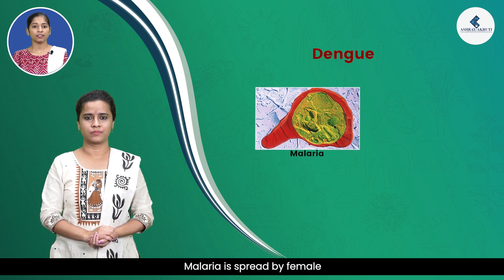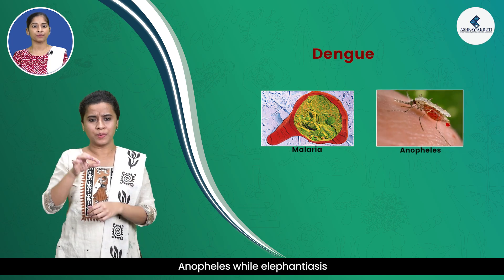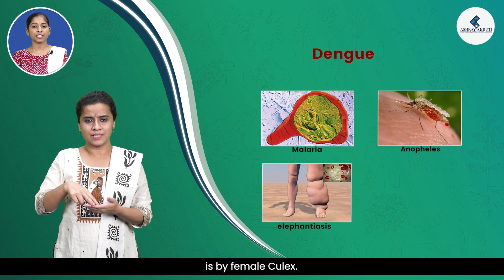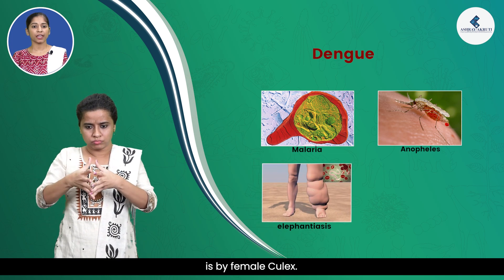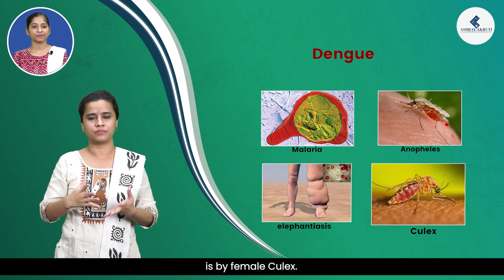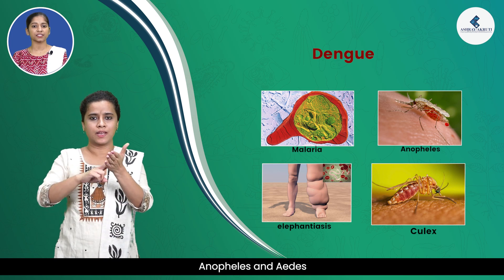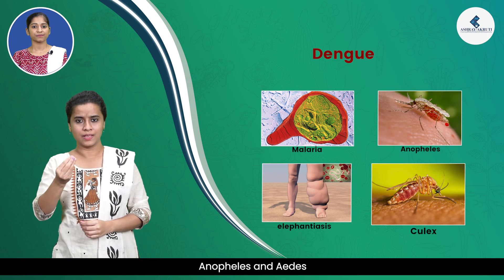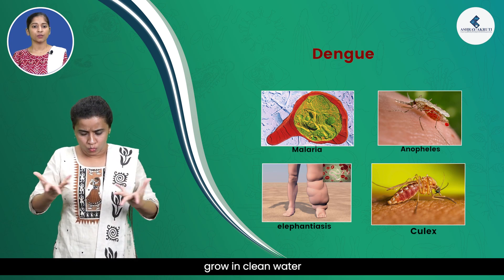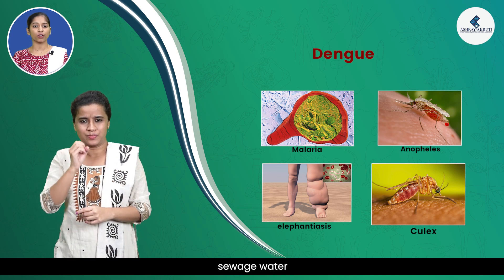Malaria is spread by the female Anopheles mosquito, while elephantiasis is spread by the female Culex mosquito. Anopheles and Aedes grow in clean water, while Culex breeds in dirty, sewage water.